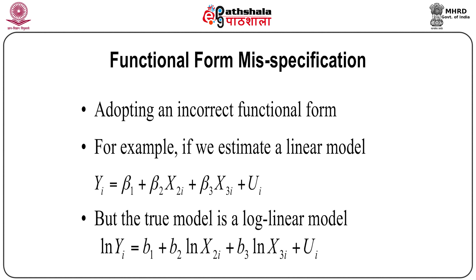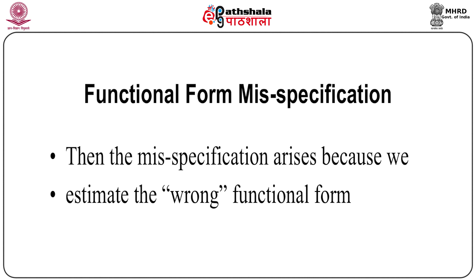Adopting an incorrect functional form basically implies we are assuming some kind of relationship which is not specifically linear. In regression analysis, we estimate a linear model: y_i = β₁ + β₂x₂ᵢ + β₃x₃ᵢ + uᵢ. But suppose the true model is of a log-linear type: log(yᵢ) = β₁ + β₂log(x₂ᵢ) + β₃log(x₃ᵢ) + uᵢ. Then we are committing misspecification because we estimated the wrong functional form.